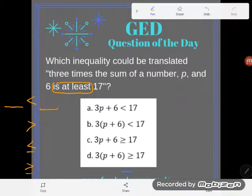Is is my verb, so is at least is going to be my inequality symbol. So let's look at the expression to the left of this. That'll be the expression on the left-hand side of my inequality.